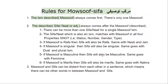Here are the rules for masuf sifah. These are the rules by which this combination is made, and through these rules we can identify this fragment while we go through the ayat of the Quran. The first rule is about the first ism — the described one, which is called masuf or man'ut — it always comes first, and there is only one masuf in one combination.